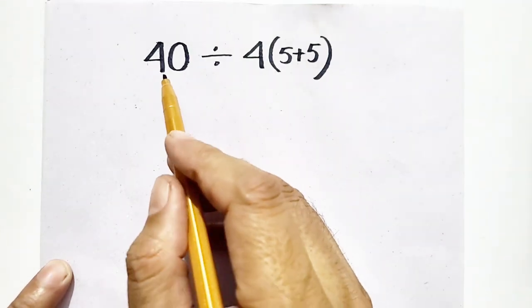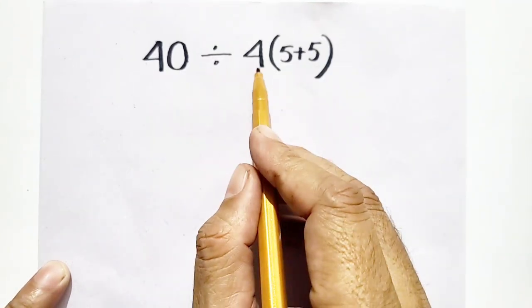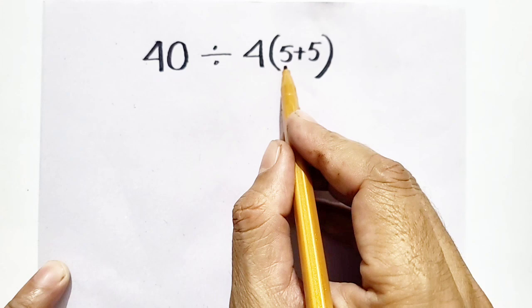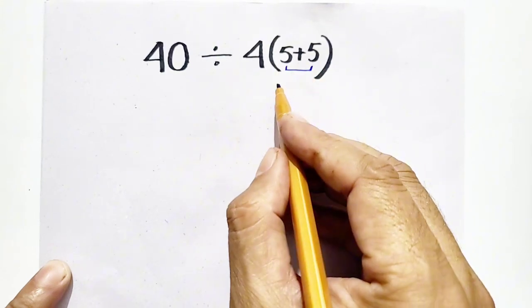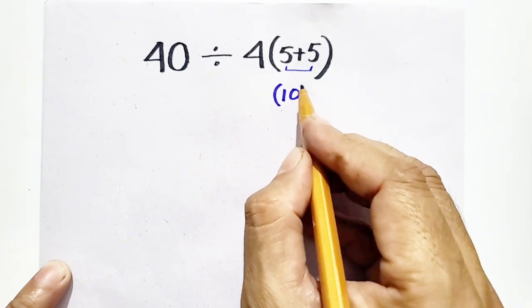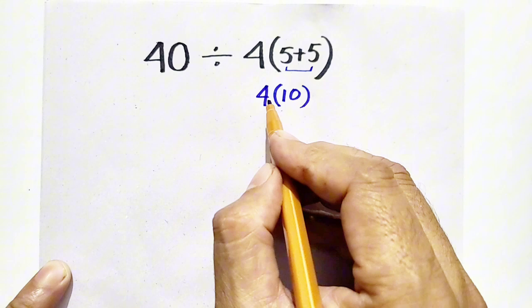Respectable audience, my question is 40 divided by 4(5+5). 5 plus 5 is 10, and here is 4.